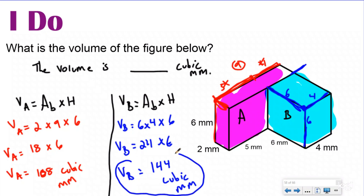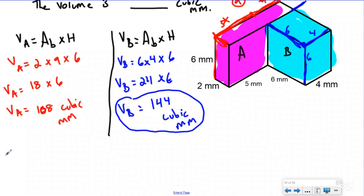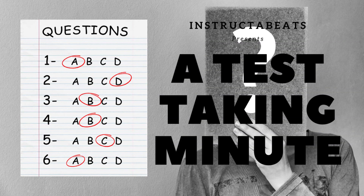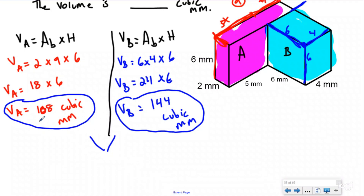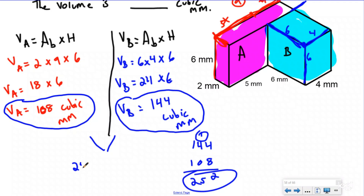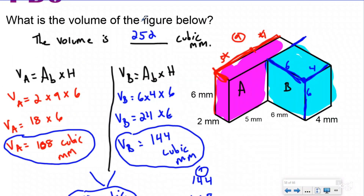Now I have the volume of both prisms. Let's have a test-taking minute: if this were multiple choice, two of the answers would be 108 and 144 — those are traps. If you don't organize your information they can trick you. You're not done until you've answered the statement, so we add them together and get the total volume: 252 cubic millimeters. On a multiple choice test, you have to stick with it through the end.